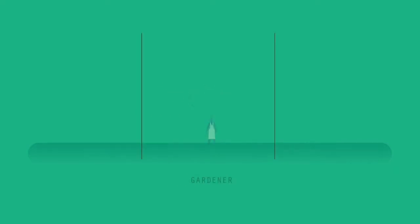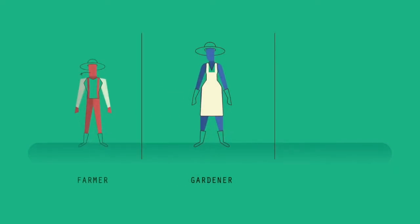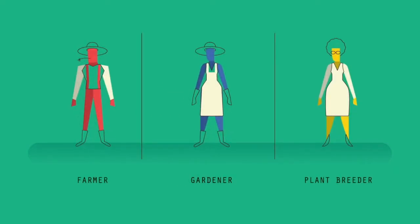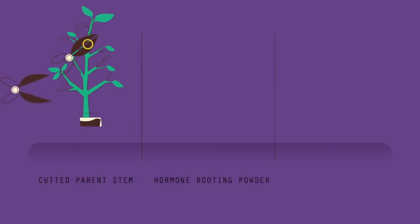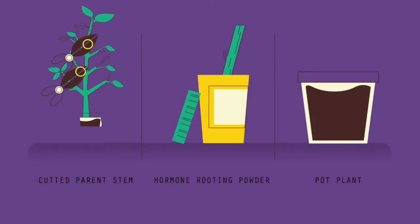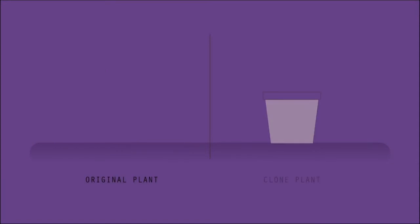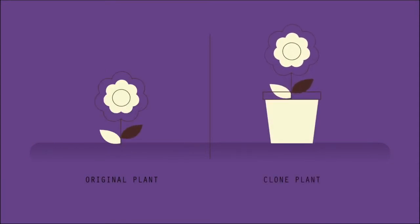Let's start with plants. A gardener, farmer or plant breeder might want to make many copies of a particular plant quickly. The easiest and cheapest way to do this is to take cuttings. Shoots are cut from the parent plant, then the end of each shoot is dipped in hormone rooting powder and placed into a pot of soil. The hormone rooting powder will encourage the cutting to start growing roots, and soon a whole new plant will have grown which is identical to the original plant.